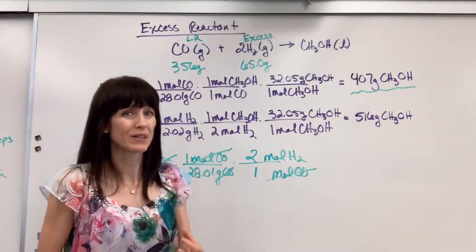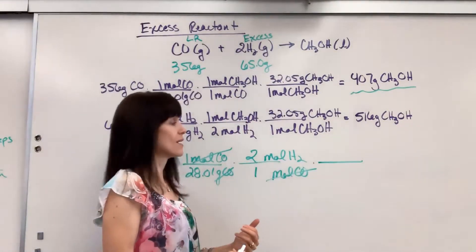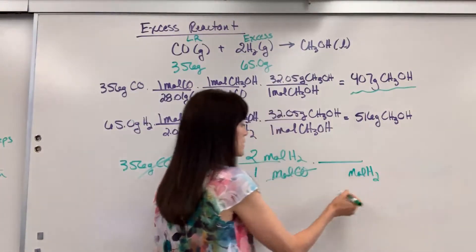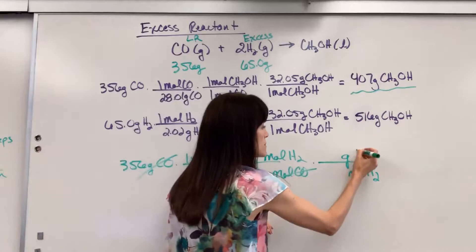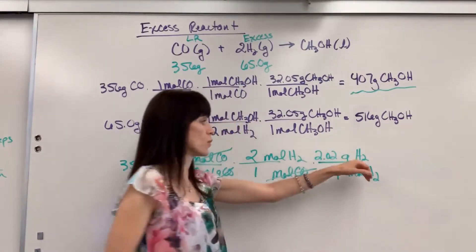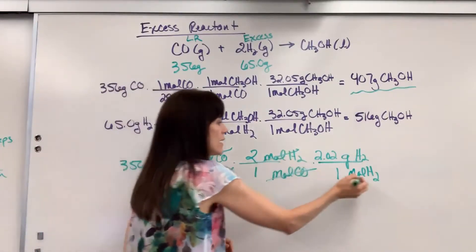But we want to know mass. We want to know mass in grams. So let's use molar mass of hydrogen. Let's put moles of hydrogen in the denominator so that cancels grams of hydrogen. One mole is 2.02, just 1.01 times 2 from the periodic table. That cancels.